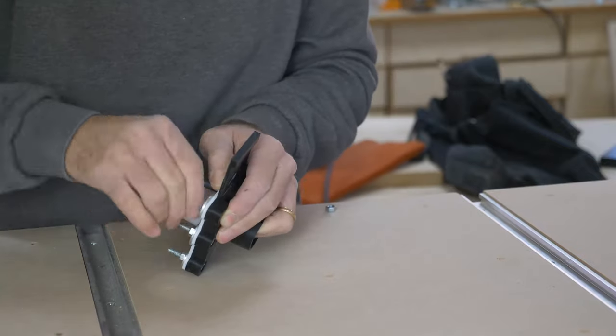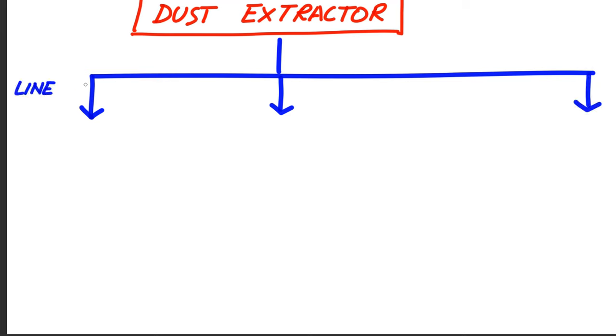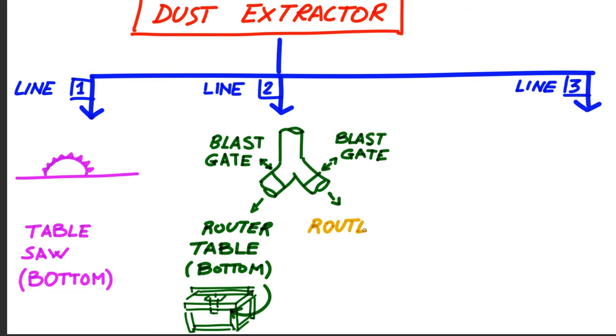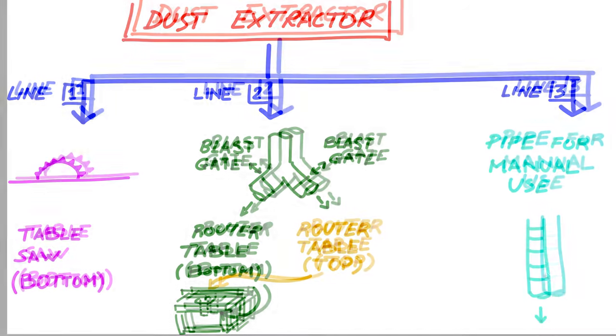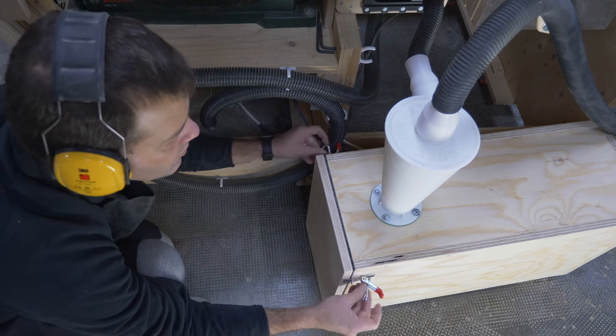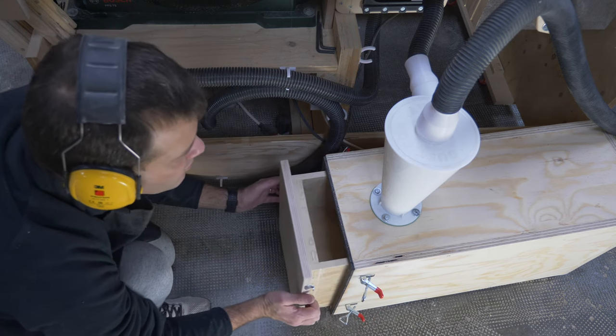Upstream of everything there is a shop vac. The three lines go to the table saw on the bottom, to the router table with a wide branch and two gates that provide maximum flexibility of the system, and to the manual use line. The dust is collected and hops inside a container with a cyclone separator.